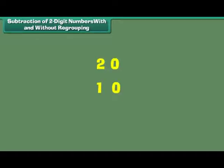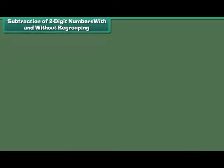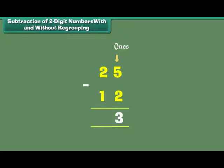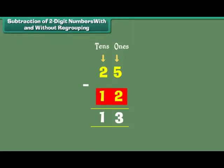Subtraction of 2-digit numbers with and without regrouping. Let us now learn to perform subtraction on 2-digit numbers. What is 25 minus 12? First, we subtract the digit at the 1s place: 5 minus 2 is equal to 3. Next, we subtract the digit at the 10s place: 2 minus 1 is equal to 1. Therefore, 25 minus 12 is equal to 13.